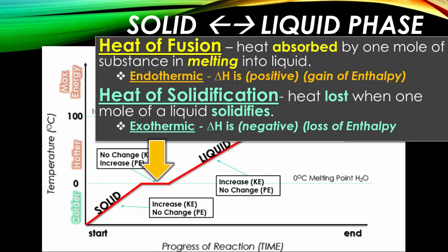However, if you were to go the reverse route, this is the heat of solidification — the amount of heat lost when one mole of a liquid solidifies. This is going to be exothermic. When heat is lost or leaves a system, your delta H is going to be negative, meaning the heat is less than it was originally. This is what we also call a loss in enthalpy.